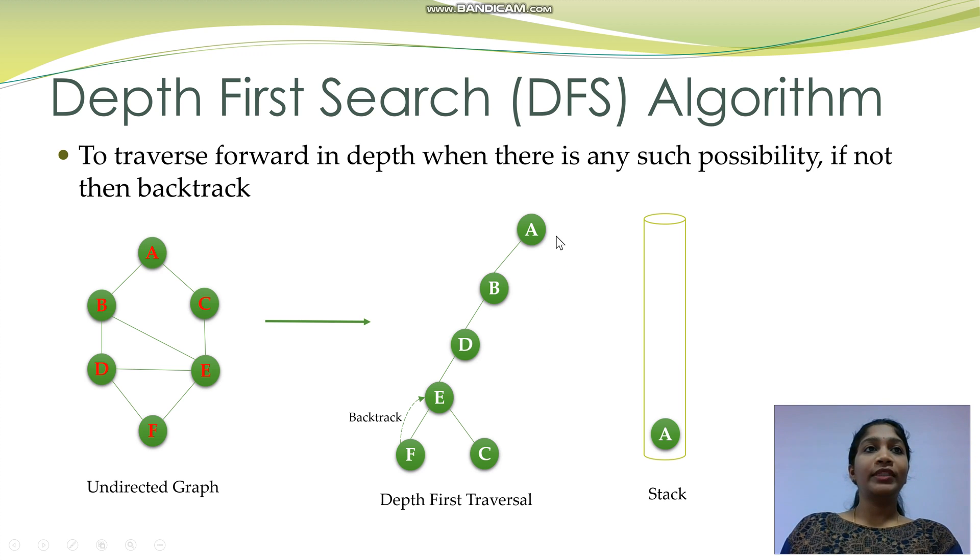So from the root vertex, we do not have any unvisited vertices. Pop A from the stack. Since the stack is empty, it means all have already been visited and the execution stops here.